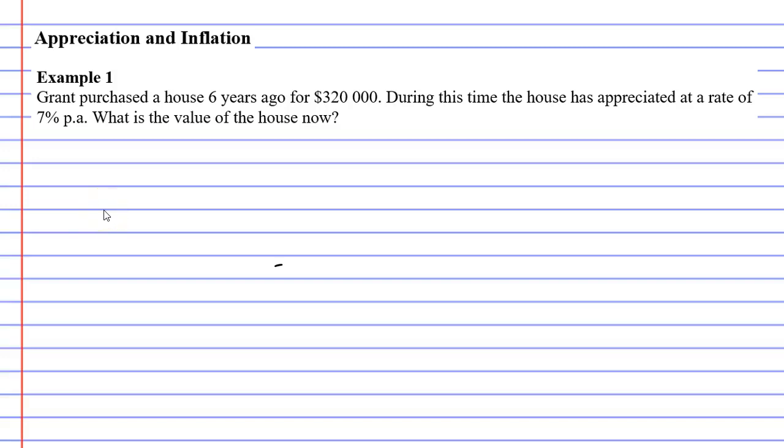In this video we're going to complete example one. Grant purchased a house six years ago for $320,000. During this time the house has appreciated at a rate of 7% per annum, and we want to figure out what the value of the house is now.